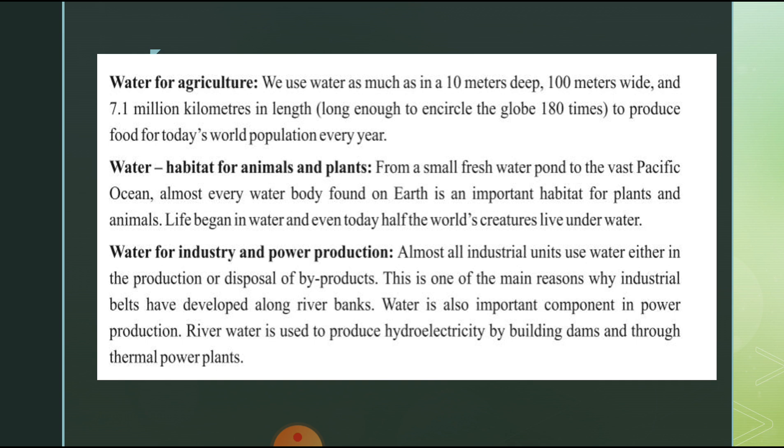Water is also an important component in power production. River water is used to produce hydroelectricity, which is the production of electricity by the force of fast-moving water, such as rivers or waterfalls. Hydroelectricity is produced by building dams and through thermal power plants — thermal meaning connected with heat.